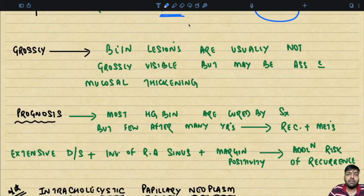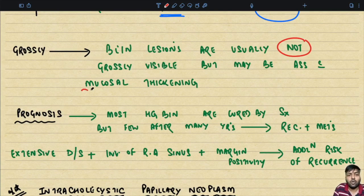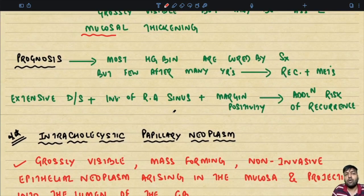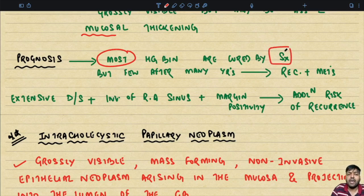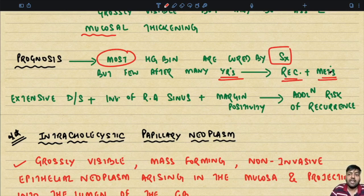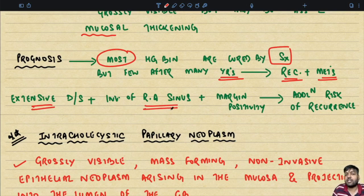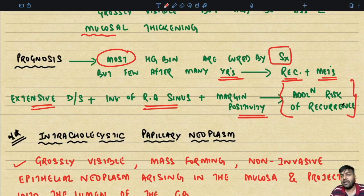Grossly, BIN lesions are usually not grossly visible but may be associated with mucosal thickening. Looking at the prognosis of BIN, most high-grade BIN cases are cured by surgery, but a few can have recurrence and metastasis after many years. Additional risk factors for recurrence include extensive disease, involvement of Rokitansky-Aschoff sinuses, and margin positivity.